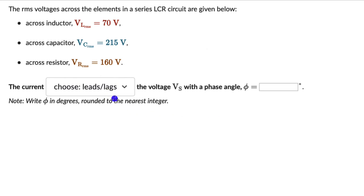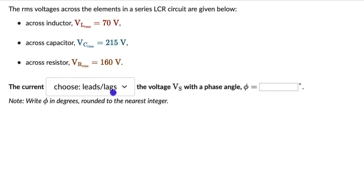Let's solve a couple of questions on phase angles in series LCR circuits. For the first one, we have RMS voltages across the elements: the RMS voltage across the inductor is 70, across the capacitor is 215, and across the resistor is 160. The question is to figure out whether the current is leading or lagging the supply voltage Vs, and also with what phase angle.